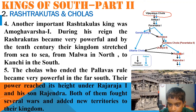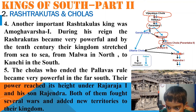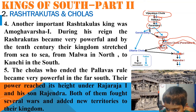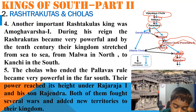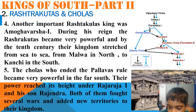Vijayalaya Chola started the kingdom of the Chola dynasty. Then came Aditya the First, Parantaka, Arinjaya, then Sundar Chola, then Parantaka the Second, then Aditya the Second, and then Raja Raja the First, and Rajendra the First. This is the father-son regional succession of the Chola dynasty.